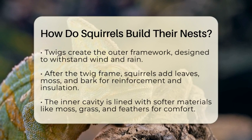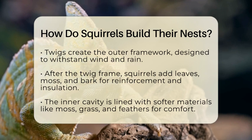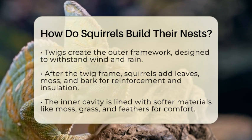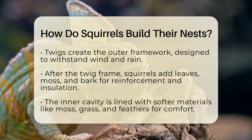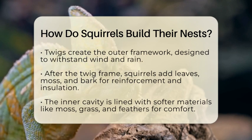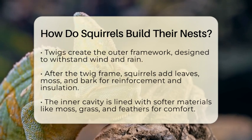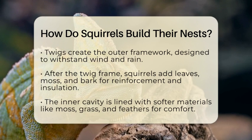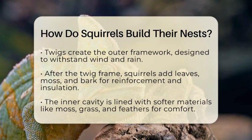Inside the nest, they line the cavity with softer materials like moss, grass, shredded bark, feathers, and pine needles. This lining creates a warm and dry environment, which is essential for resting and raising their young.